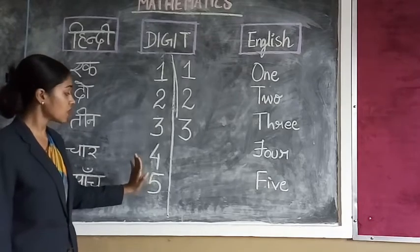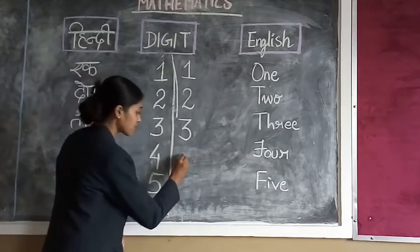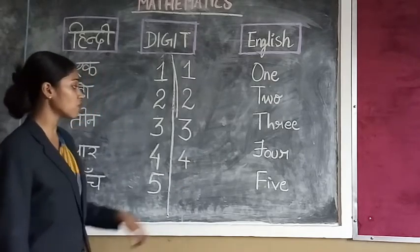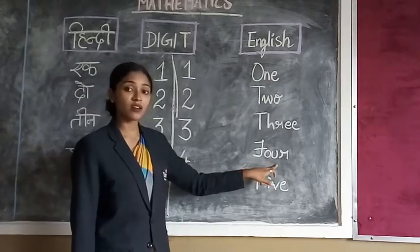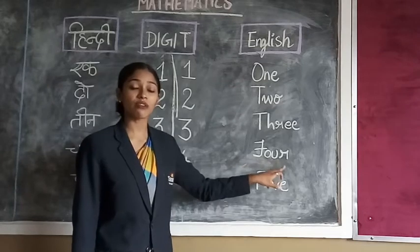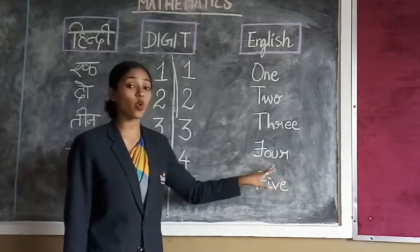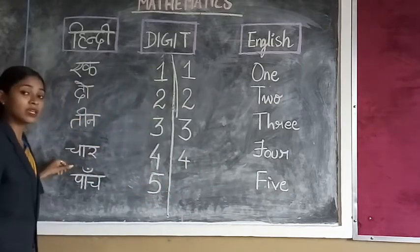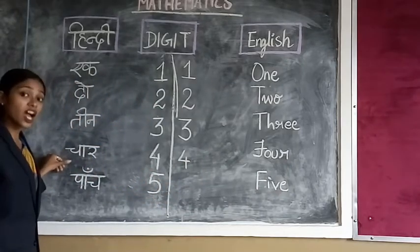Now next number, four. This is how we write four. Now what is the spelling of four? F-O-U-R. And this is Hindi which I have written now: Chaar.